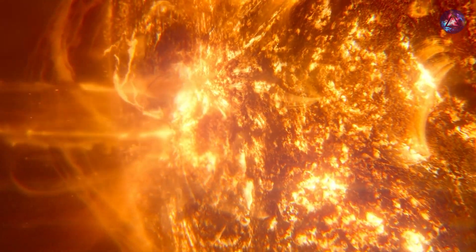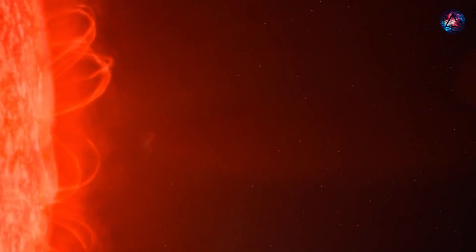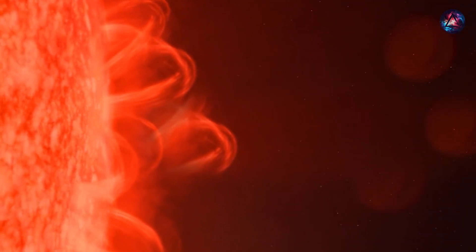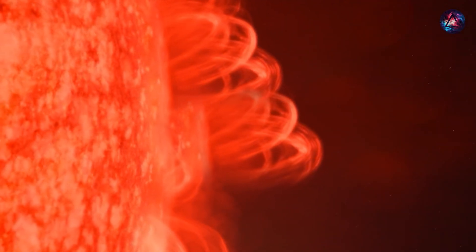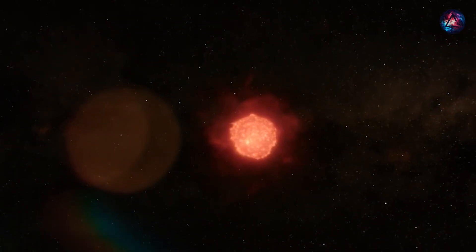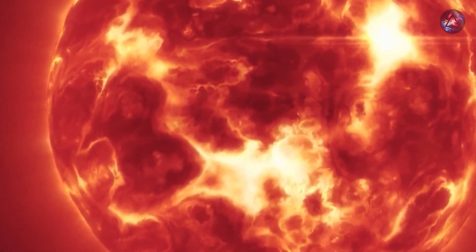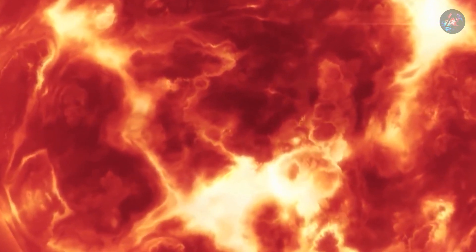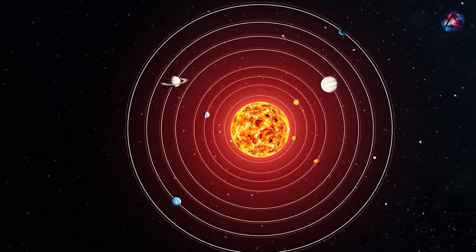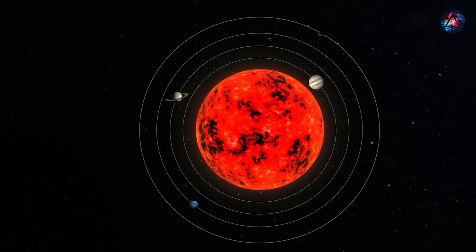In contrast to the coronal mass ejections of our sun, Betelgeuse's recent surface mass ejections highlight a stark difference in magnitude. Over millennia, Betelgeuse has exhibited expansive growth, with its outer orbit potentially extending beyond Jupiter's. Betelgeuse is so big that if you were to place it in our own solar system, it would stretch to the orbit of Jupiter.